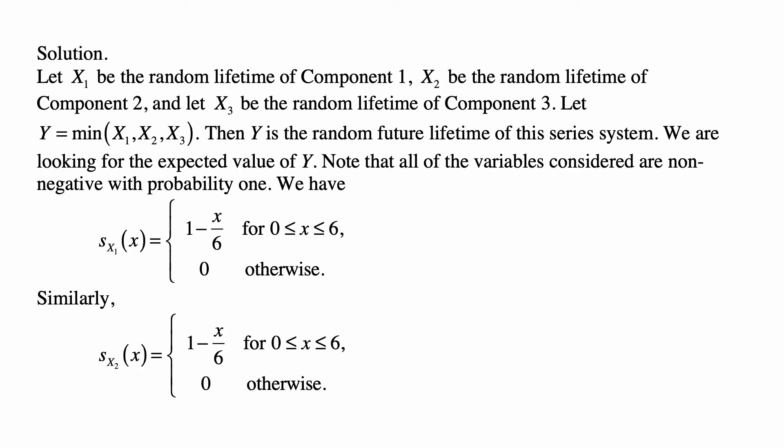Here's the solution. Let us write X1 for the random lifetime of component 1, X2 for the random lifetime of component 2 and X3 for the random lifetime of component 3. Let Y equal the minimum of X1, X2, X3. Then Y is the random future lifetime of this series system. We are looking for the expected value of Y. Note that all of the variables considered are non-negative with probability 1.